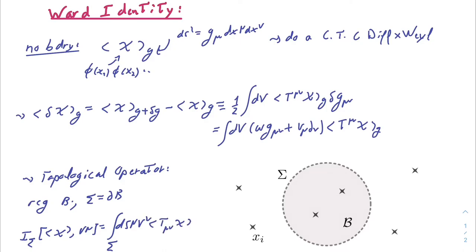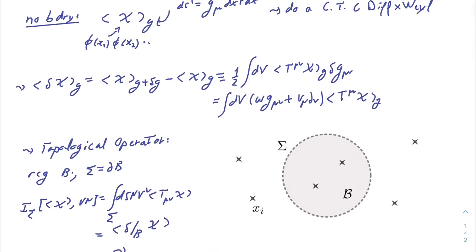And this operator, by definition and by using the previous relation, can be shown to actually perform this conformal transformation on the subset of points which are in the inside of B. And this shows us how T actually encodes a local conformal transformation, and it can be integrated out.